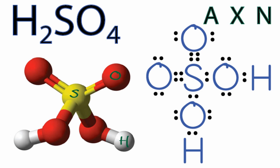A, that's the sulfur. X, that's the number of atoms or groups of atoms attached to the sulfur. We have two oxygens and two OH groups, so we have four things attached to that central sulfur.